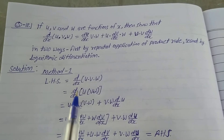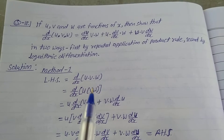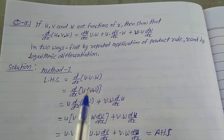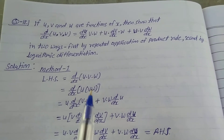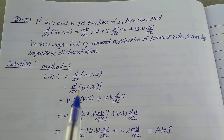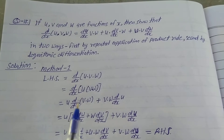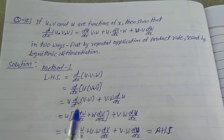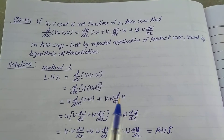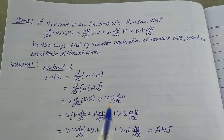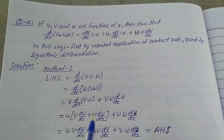Solution — First method: LHS is equal to d/dx of (u·v·w). We treat this as two functions: u is the first function and v·w is the second function. Applying the product rule: u is constant times d(v·w)/dx plus v·w is constant times du/dx.